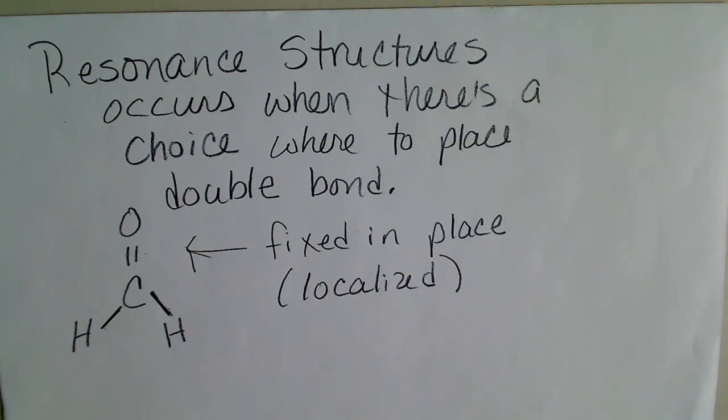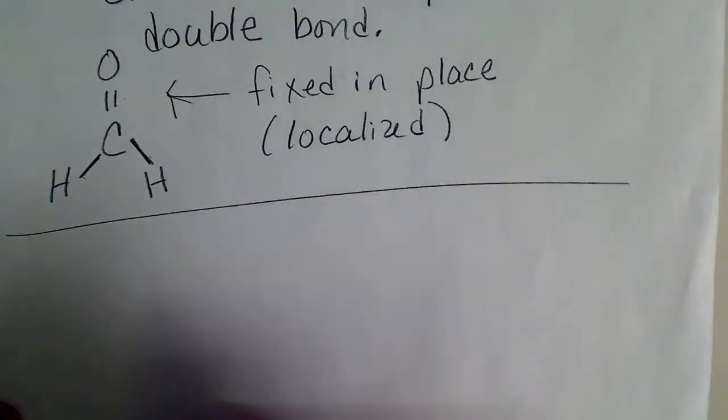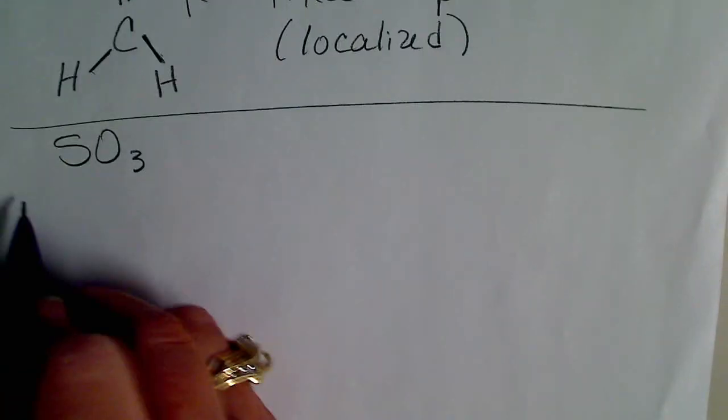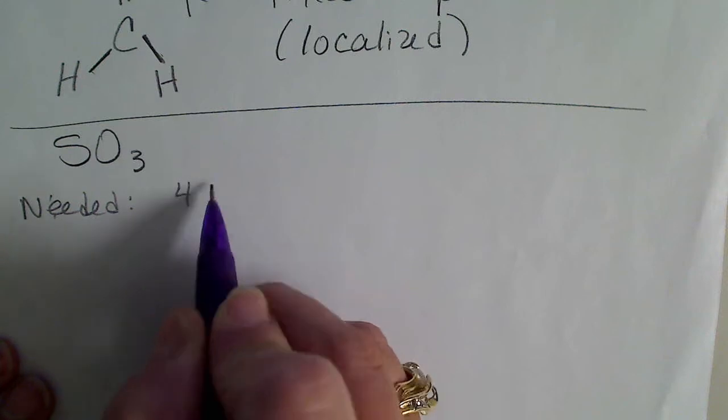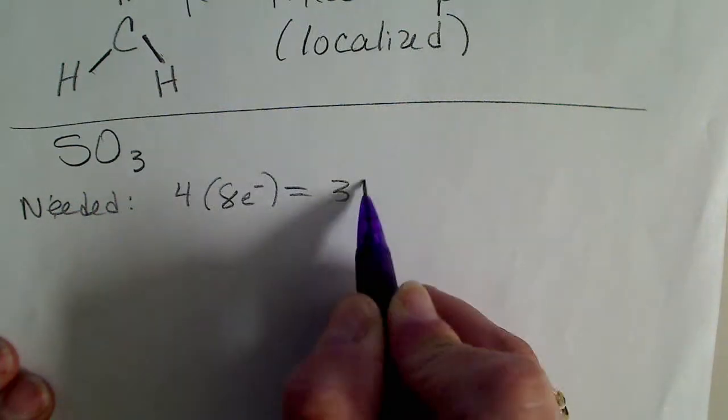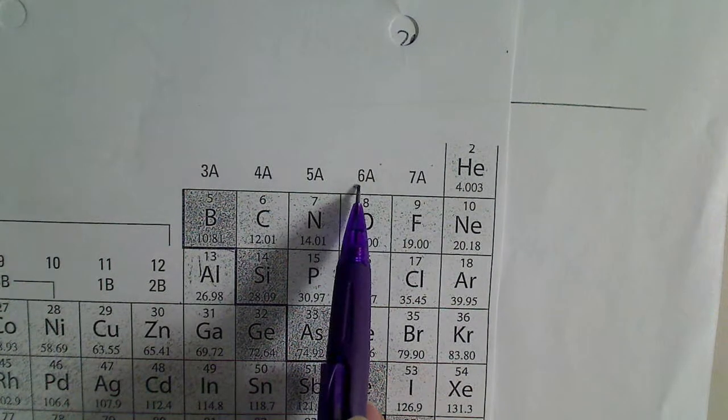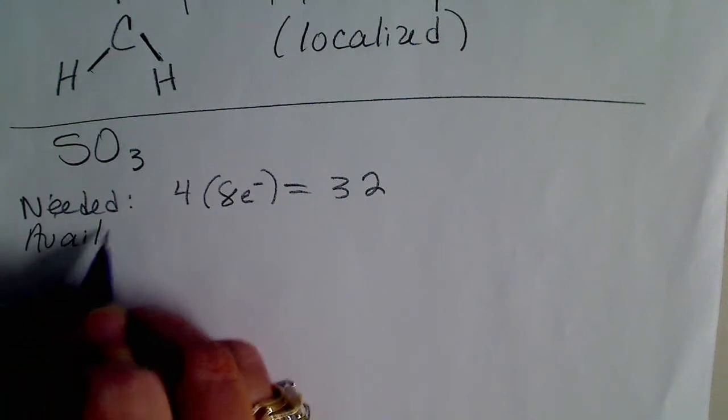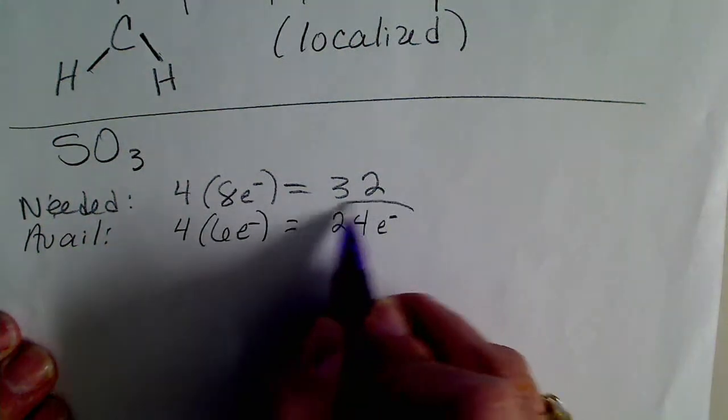For any other atom other than hydrogen that can have eight electrons around it, we often have a choice on where to place the double bond. I'm going to do an example with sulfur trioxide, SO3. If we look at SO3 and did the needed available shared method, the needed - there's four atoms - all four atoms need eight electrons to be happy. That gives us 32. Since sulfur and oxygen are in the same column, the valence electrons we're going to count are at the top of the column. Sulfur and oxygen each have six valence electrons. The available electrons: all four atoms have six electrons, that gives us 24.